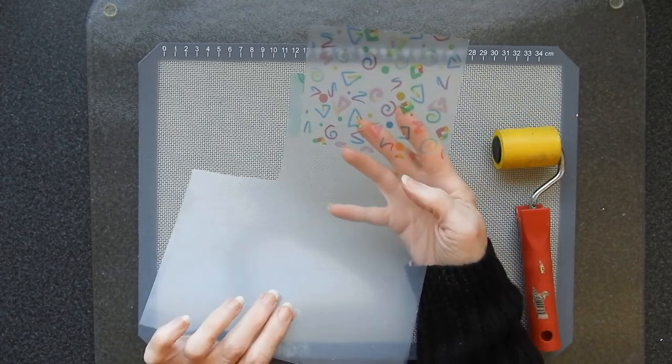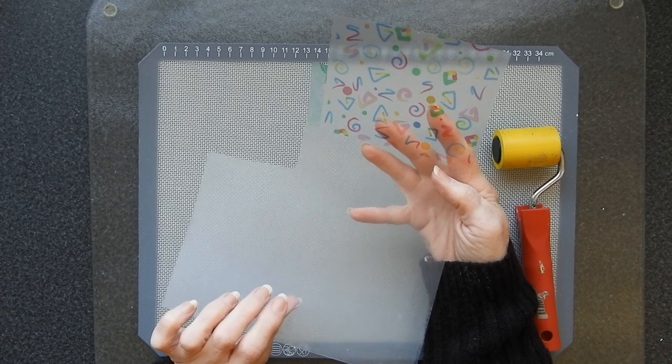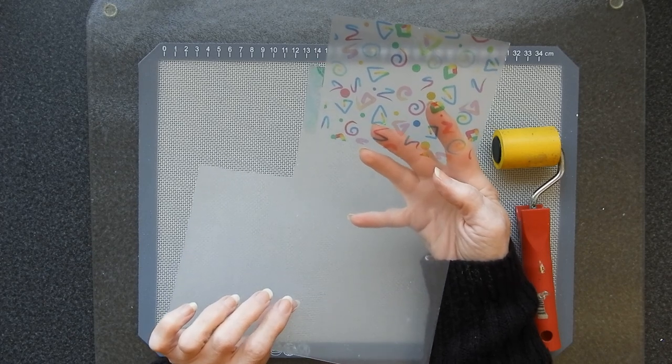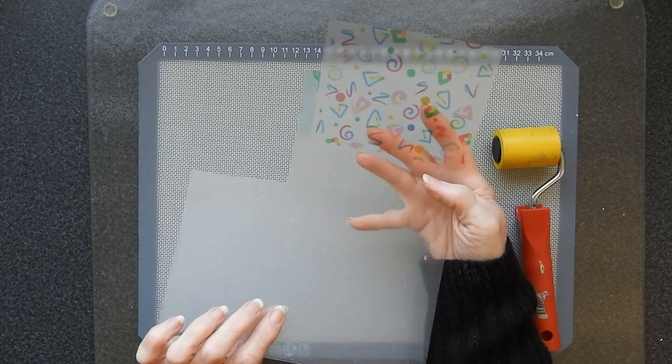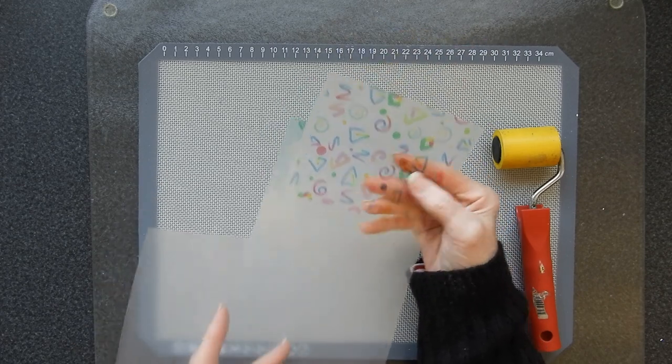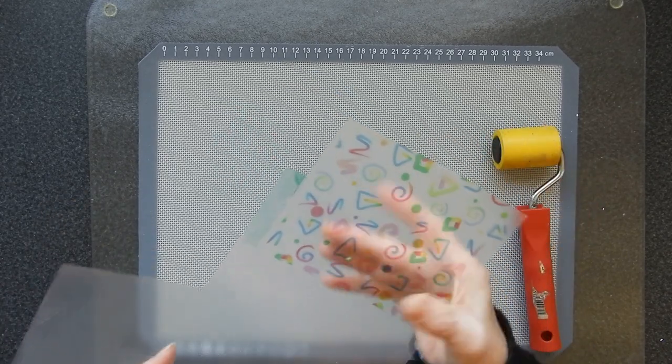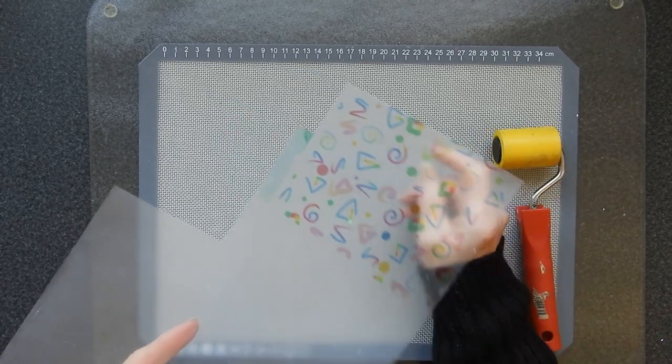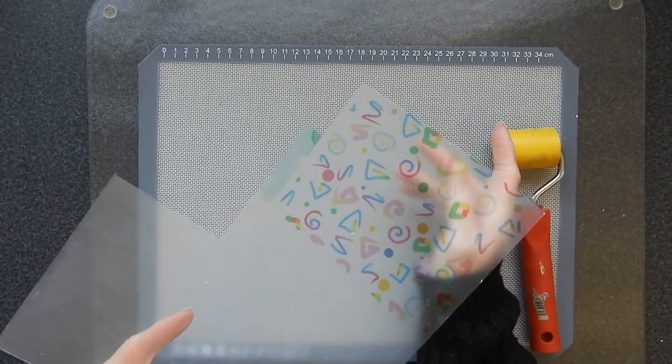When you've done that, put it with the treated side that's going to be printed on into your printer and print your design as you wish. And this is done with an inkjet. It's perfectly fine. It came out of my printer dry. I didn't have to wait for it to dry for half an hour or anything. It was fine as soon as it came out of the printer.